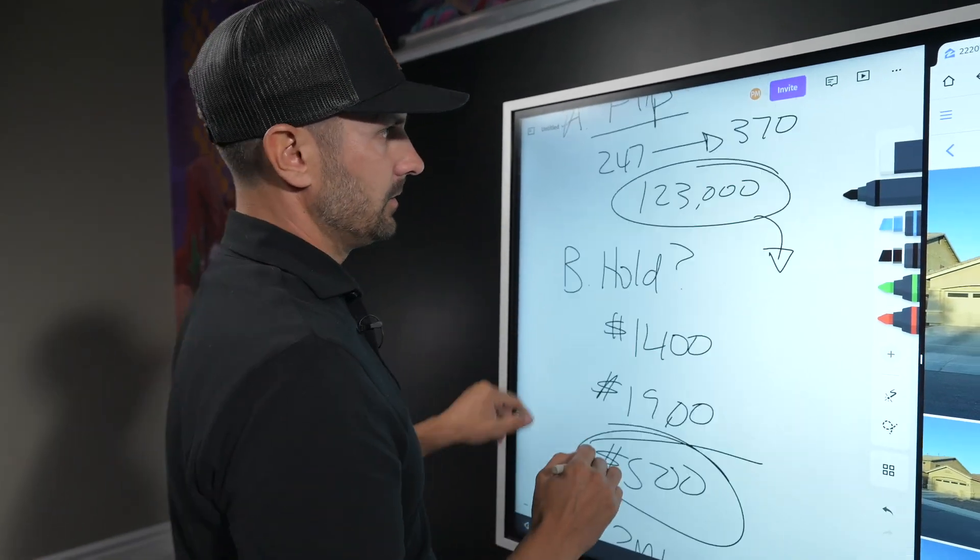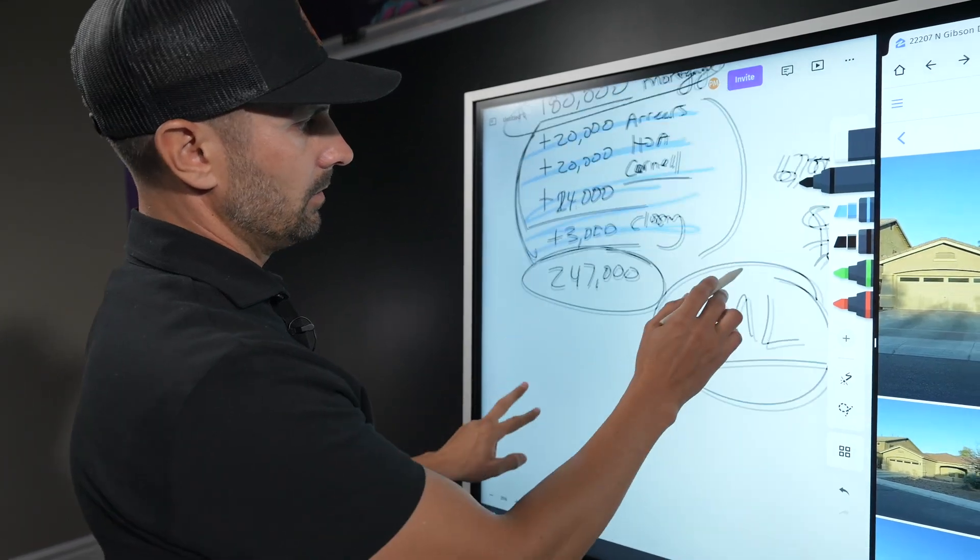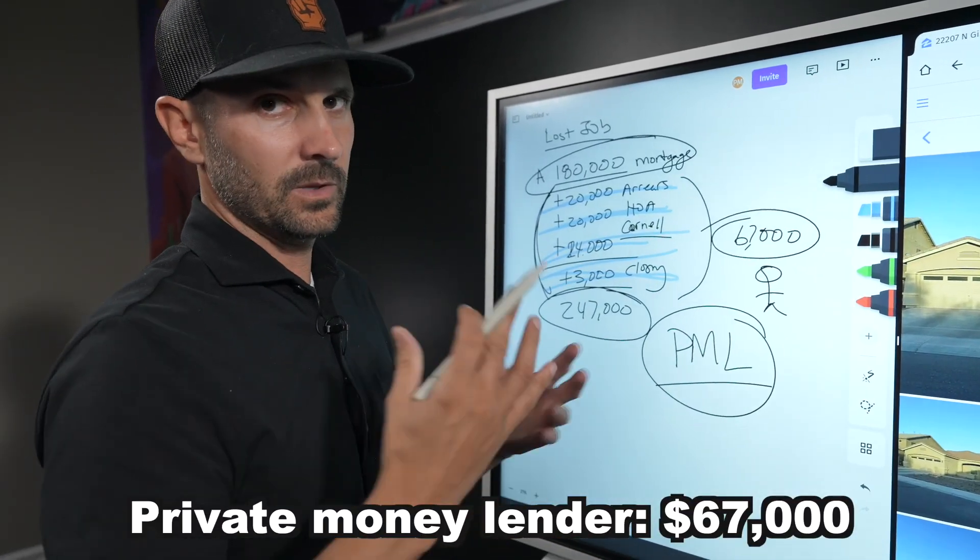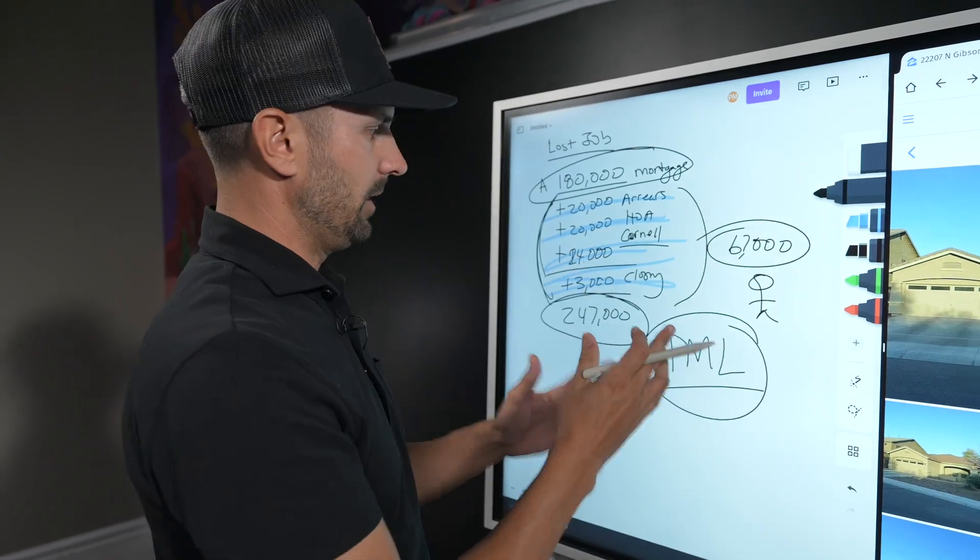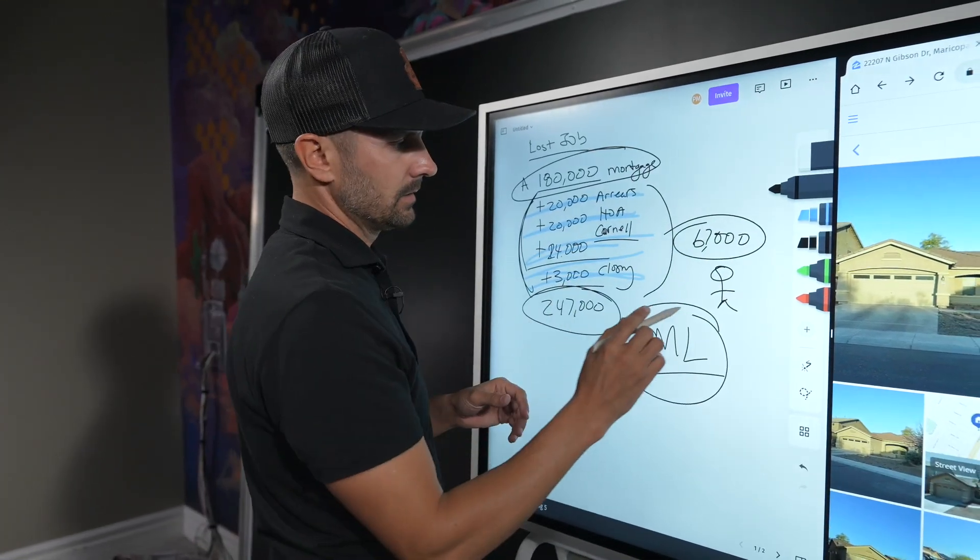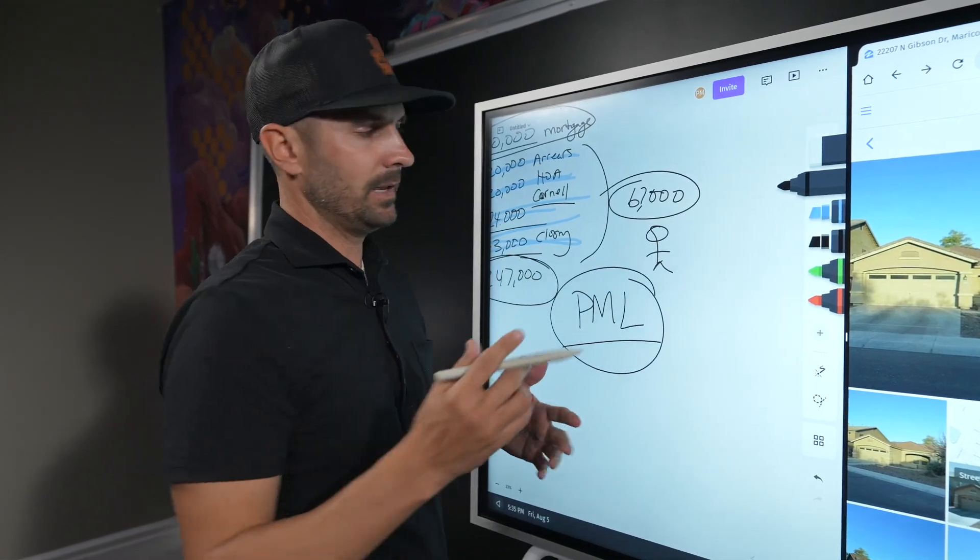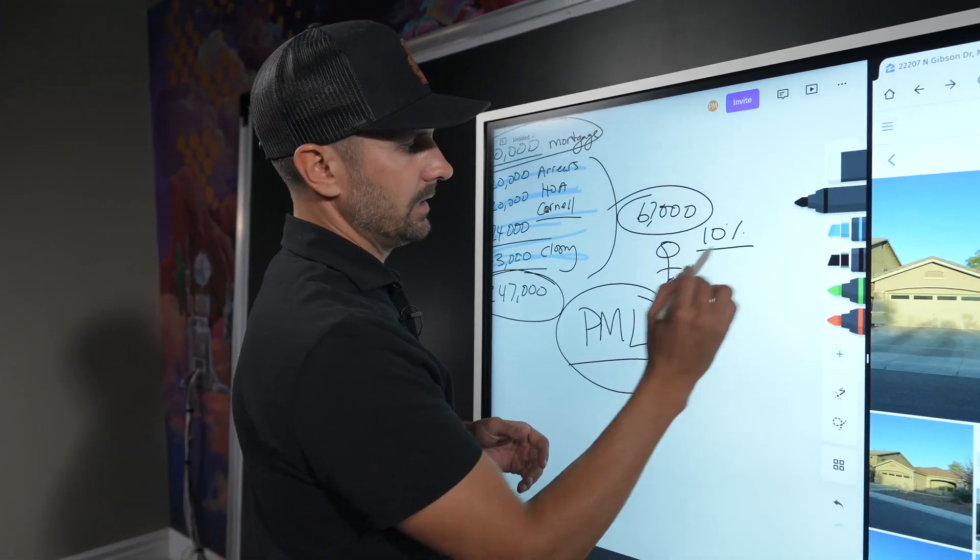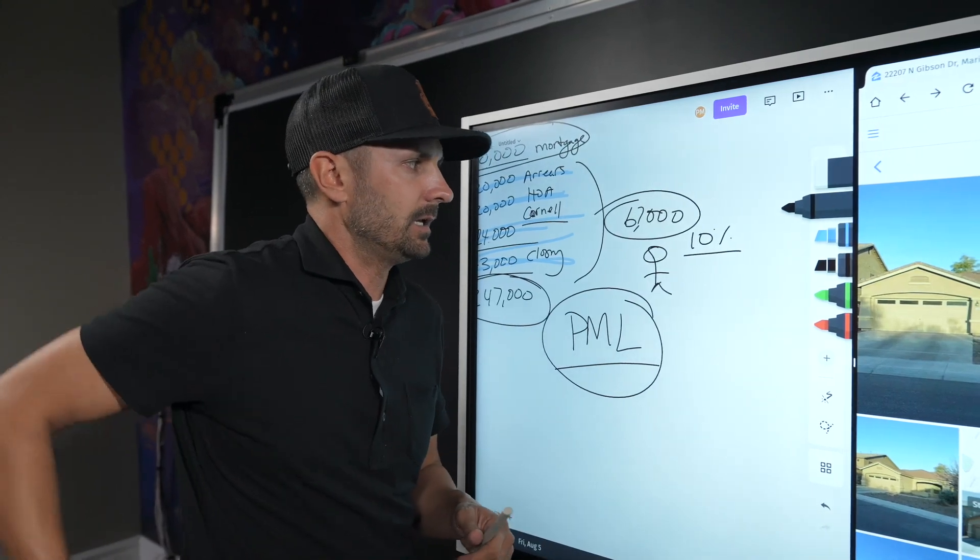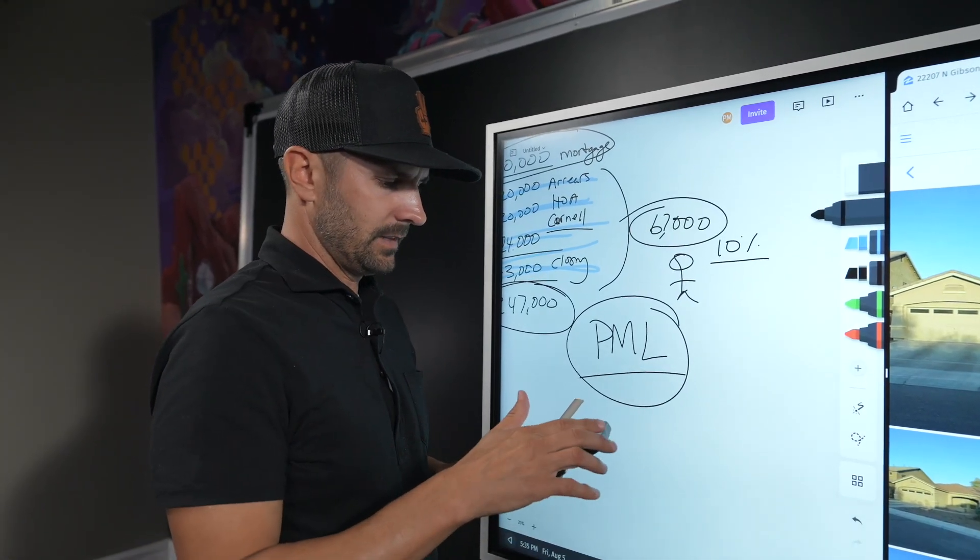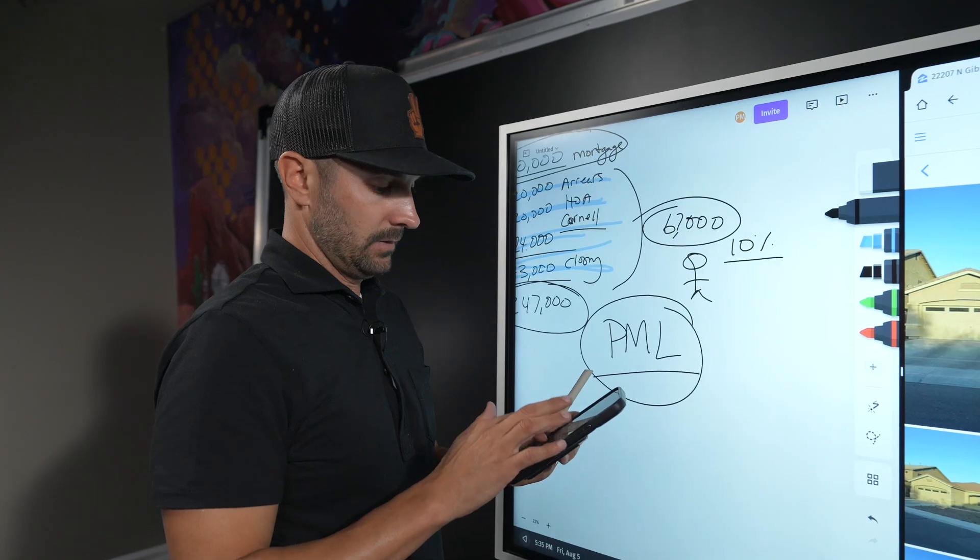The problem is, what are we not remembering here? Who else do I owe money to besides just the bank? The private money lender. So the private money lender, you guys remember up here, I borrowed $67,000 from that person to catch up the arrears, get the cash to the seller, pay for closing costs, all those types of things.